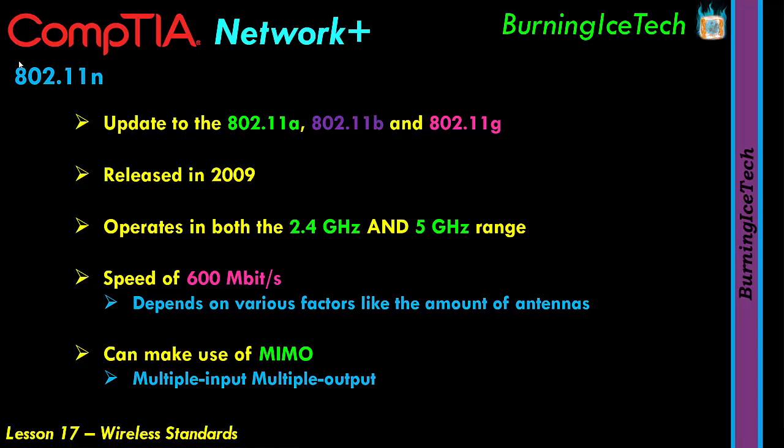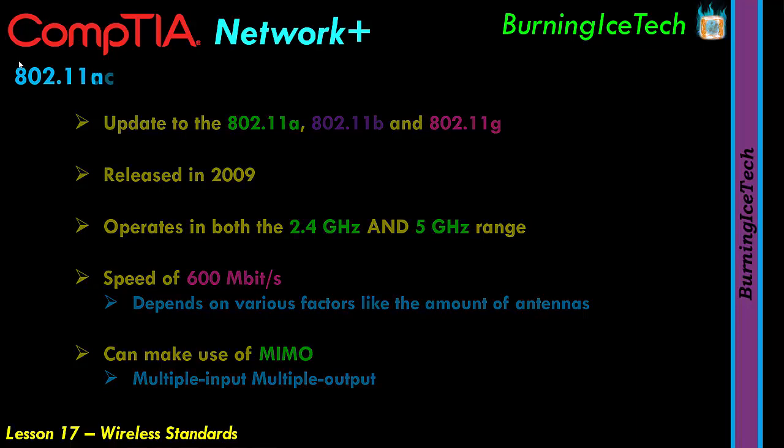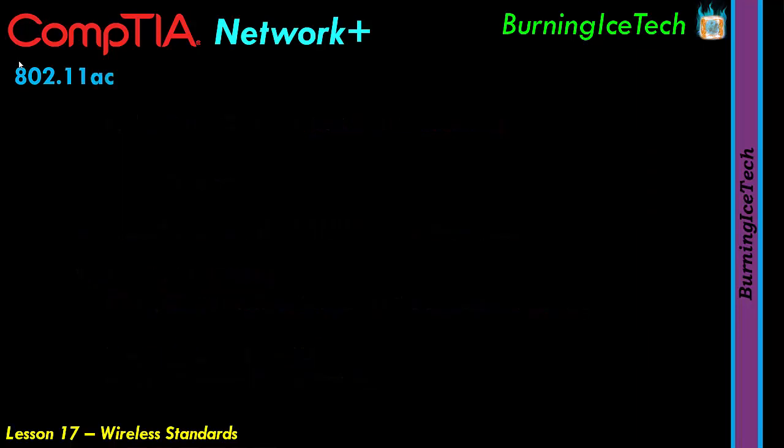Depending on the device and its needs, you can give it more streams and more bandwidth. So in a nutshell, you've got some control over how much bandwidth and speed certain devices have when they connect to your wireless device. Then we have the fifth standard on our list — the 802.11ac.